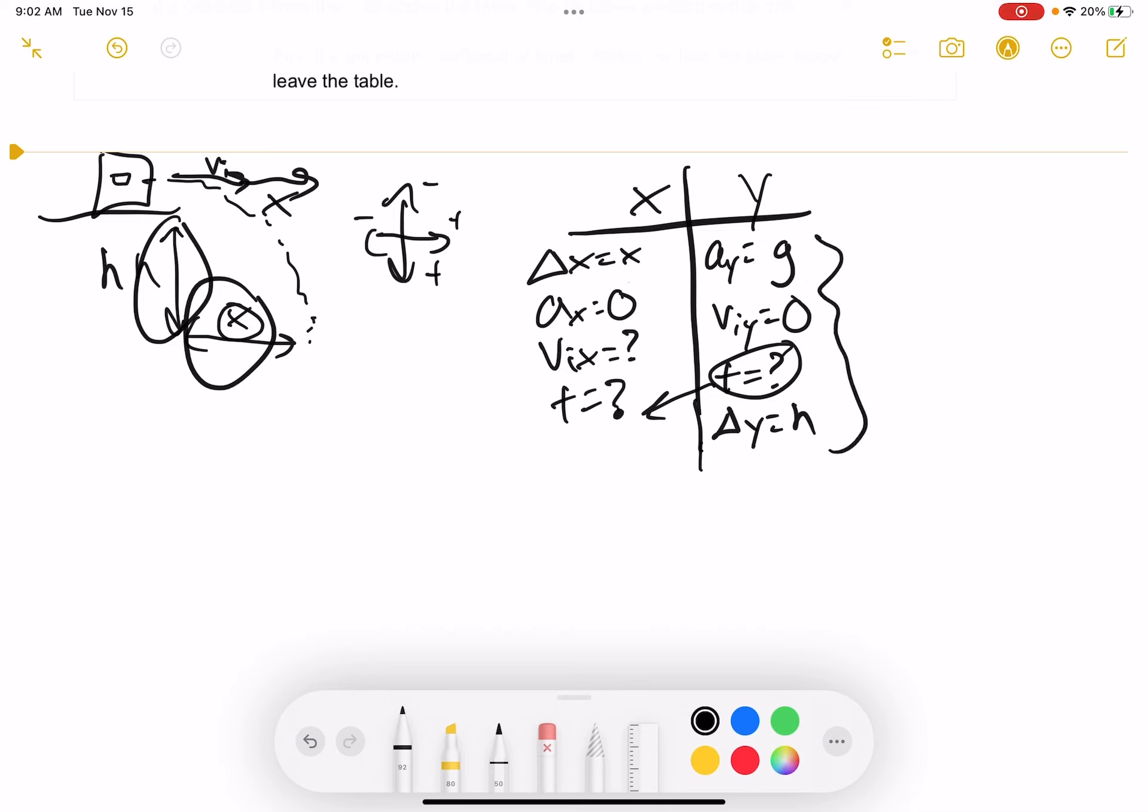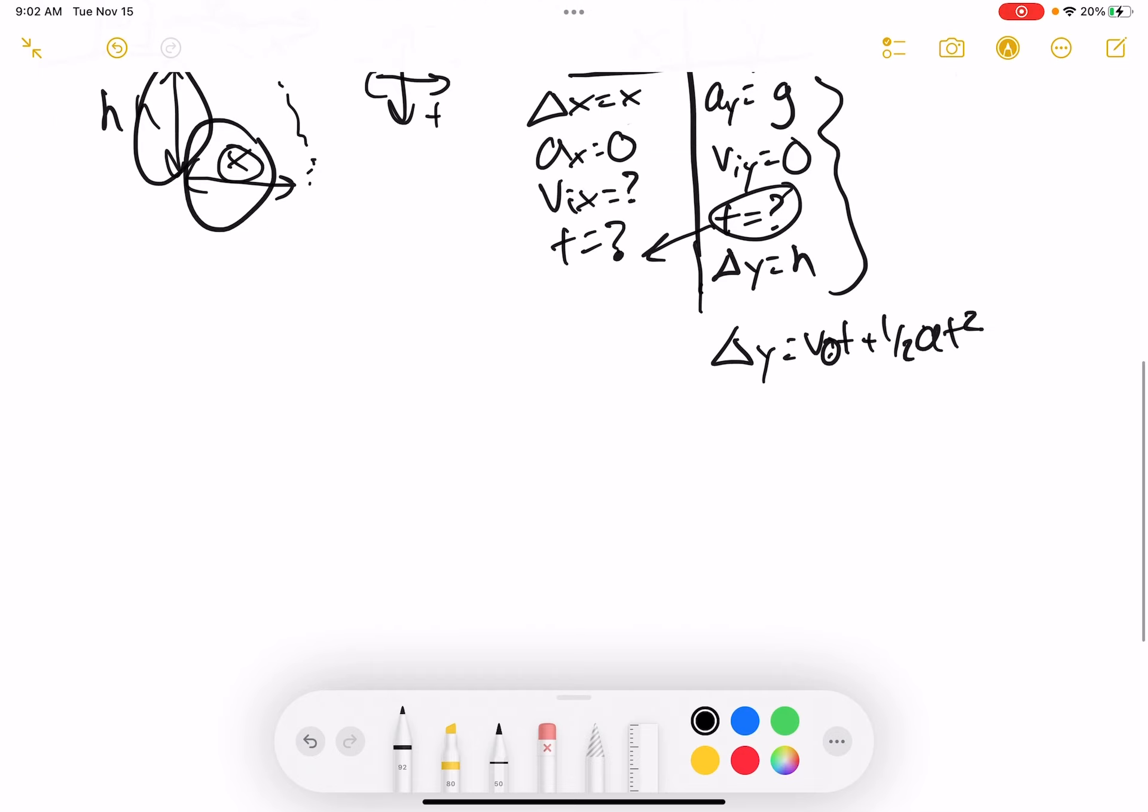So this would be the time when you would take out your formula sheet and figure out what matches these variables. So we have delta y equals vit plus one half of at squared. You may also see this as v naught. And so let's just plug in what we know. So we have h equals, what's going to happen to this whole part since vi is zero? That's going to go to zero. So we'll just have one half g t squared. So I'll multiply by two and then divide by g and then take the square root of that. So t will equal root two h over g. Now, I just need to plug into the x side.